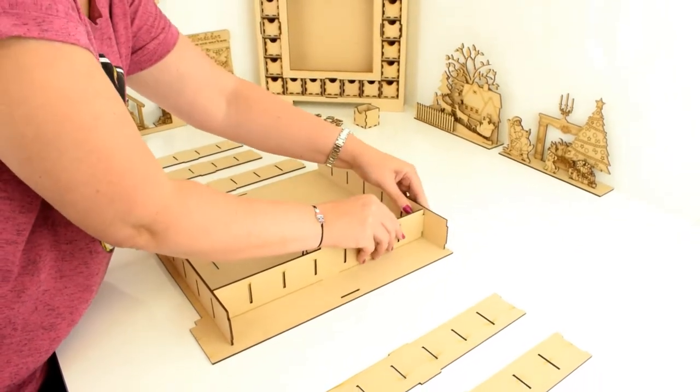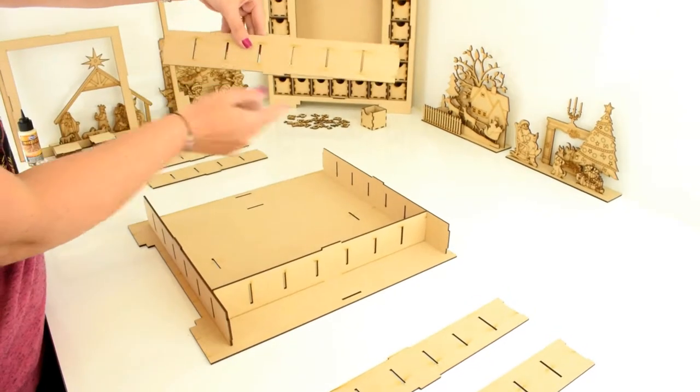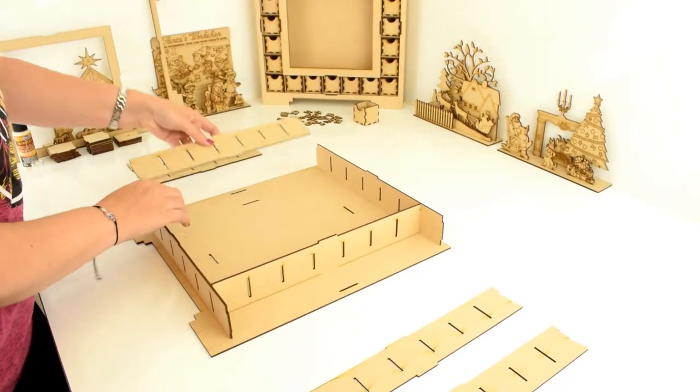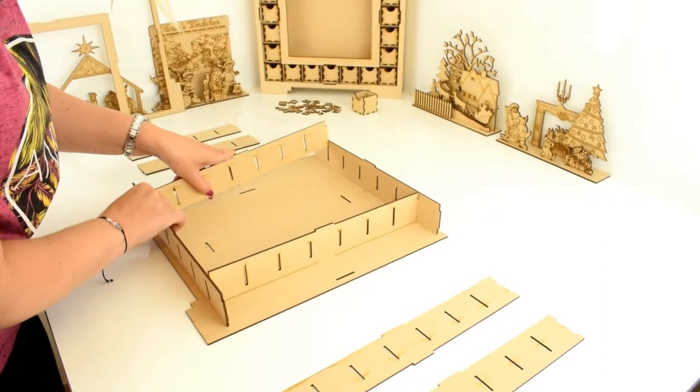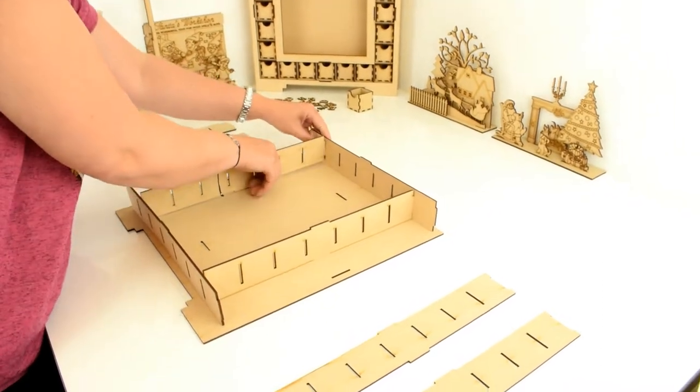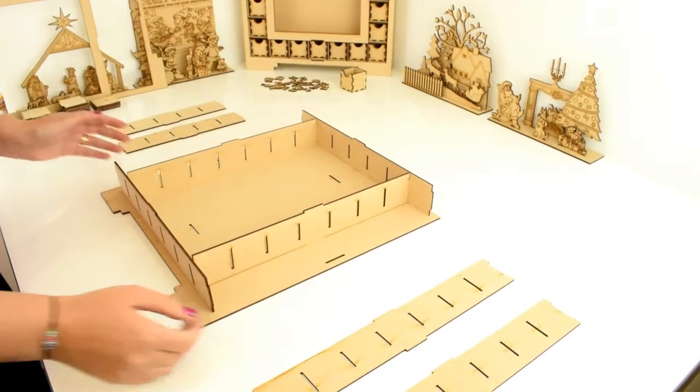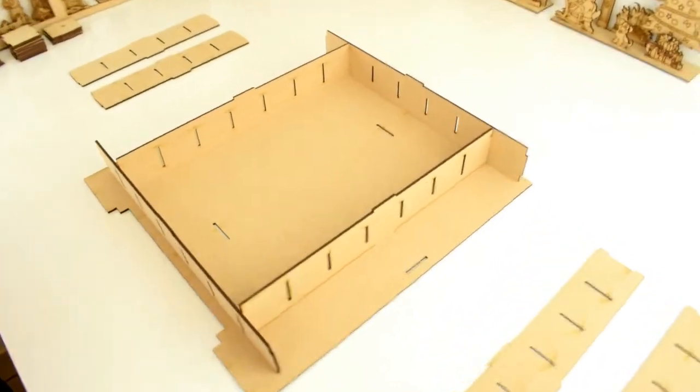And the same piece again with the pieces on the ends goes on the inner hole of the other side. That's the backboard complete.